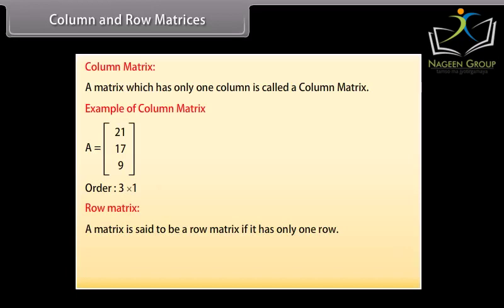Row matrix: A matrix is said to be a row matrix if it has only one row. For example, row wise 3, 5, 1 is a row matrix as it has only one row.